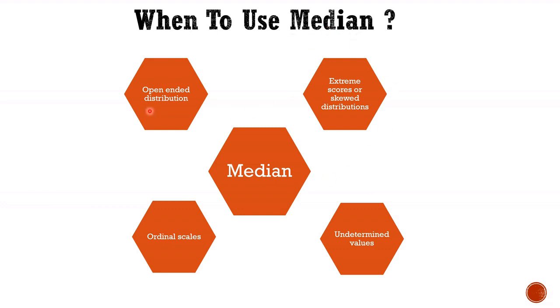Now when to use the median? When there is an open-ended distribution of the data. Suppose if we are taking data like 10, 20, 30, 40, 50, 60, 70, and 80 and above, that 80 and above is an open-ended distribution. In this case we have to use the median. If extreme scores or skewed distribution is there, undetermined values and ordinal scale, then we will use the median.